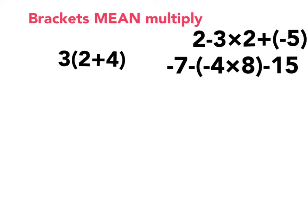So in this example, first I work out what's in the brackets. What's 2 plus 4? 6. Then what that means is that I multiply 3 by 6, because 3 is directly next to the brackets. Brackets mean multiply. So 3 times 6 is 18. Pretty simple, pretty straightforward.